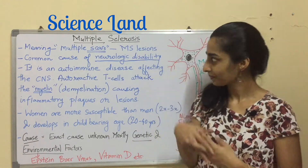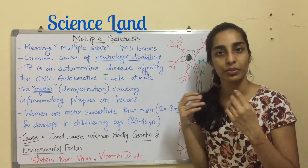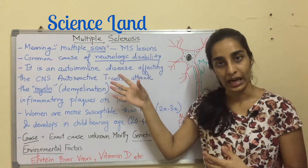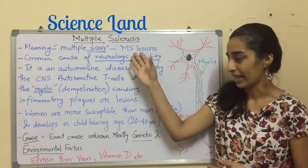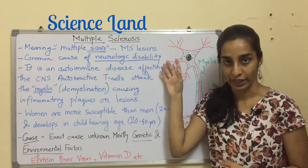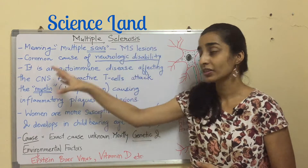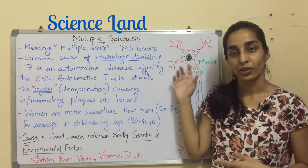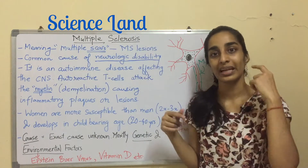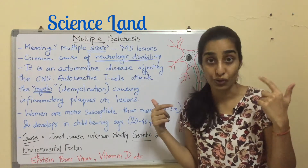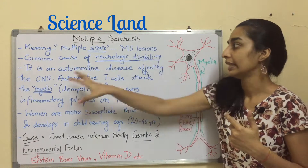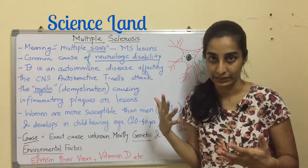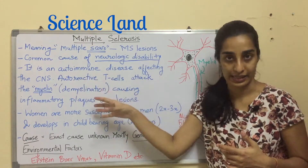Multiple sclerosis — the literal meaning of these two words is 'multiple scars.' These scars are actually the MS lesions. Multiple sclerosis is a common cause of neurologic disability; it causes disability, but that disability is neurological.